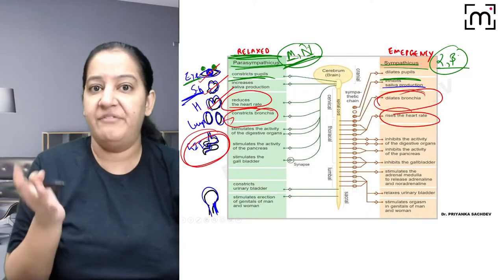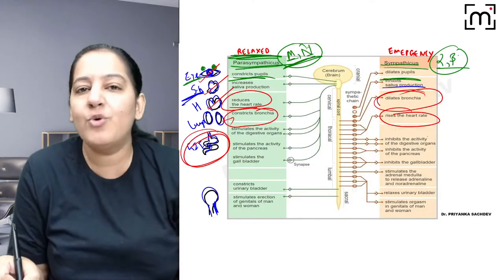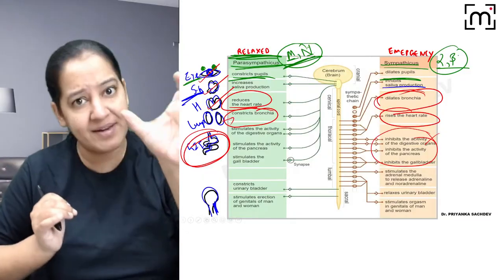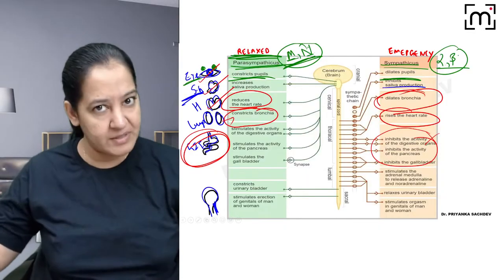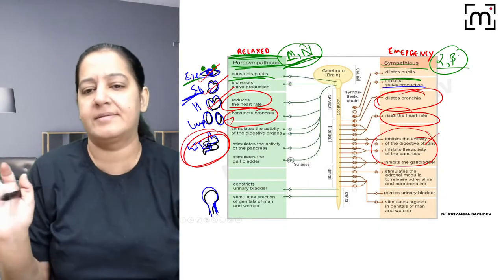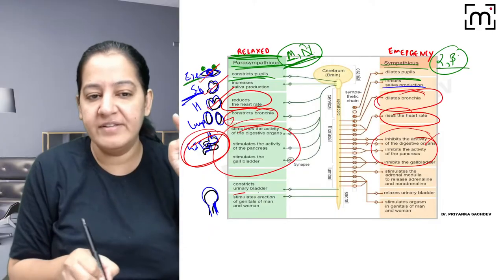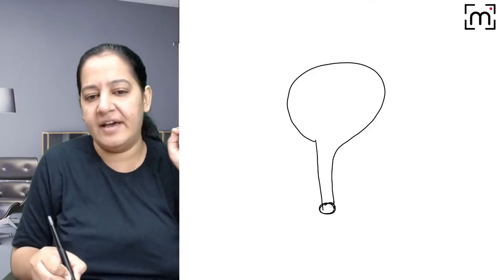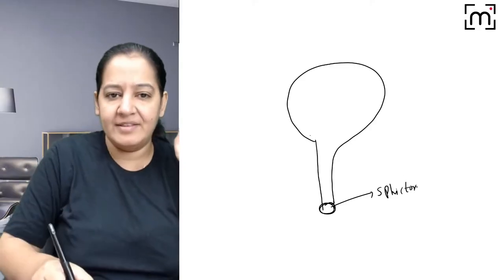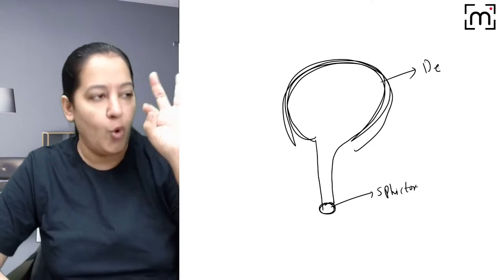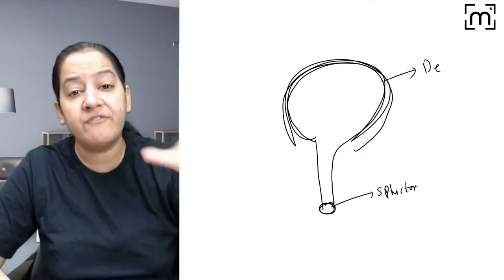The urinary bladder requires careful understanding. The urinary bladder has two components: the detrusor muscle inside the bladder, and the urethral sphincter at the urethra. When not micturating — walking, eating, attending a lecture — the detrusor is relaxed and the sphincter is constricted, so urine accumulates without leaking. At the time of micturition, the opposite happens: detrusor constricts and sphincter relaxes, so urine comes out.